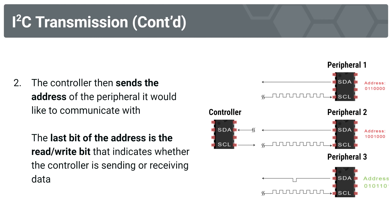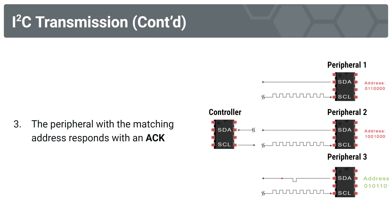Step two: the controller sends the address over the SDA line to identify the peripheral it wants to communicate with. Each peripheral compares its own address to the one received. The last bit of the address is the read/write bit. Peripheral 1 sees the address isn't its own and goes silent; peripheral 2 does the same; but peripheral 3 realizes it's its address and prepares to communicate. Step three: peripheral 3 sends an acknowledgment over the SDA line back to the controller.